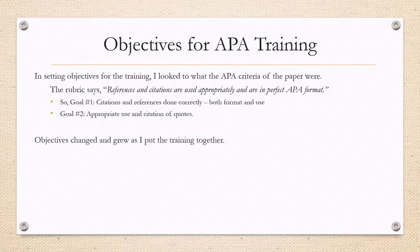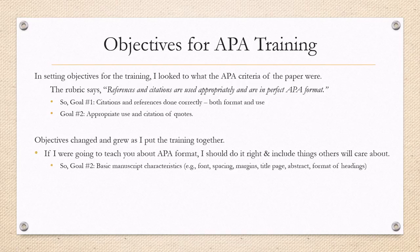Objectives changed and grew as I put the training together. I started to figure if I were going to teach you, I should do it right and include things that others will care about. So goal number three is basic manuscript characteristics: font, spacing, margins, title page and abstract, and formatting of headings.